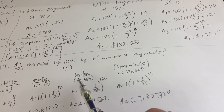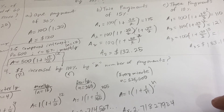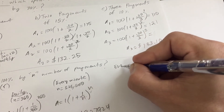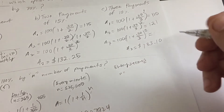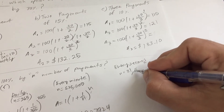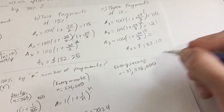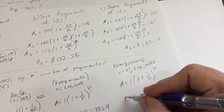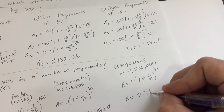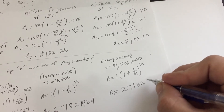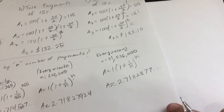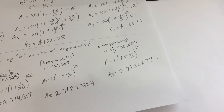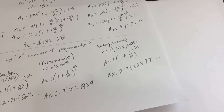Let's do one more: every second. Compounding every second means n equals 31,536,000. Again I'll write it as (1 + 1/n) to the n, and for that value I get approximately 2.71828770. That's a much larger n than before, yet the value has barely grown — it really seems like we're reaching a limit.